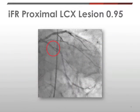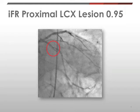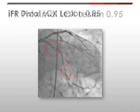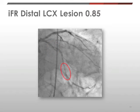In this case, we measured IFR in the proximal part of the vessel, then between lesions A and B, and then distal to lesion B. The IFR measurement in the proximal left circumflex artery is 0.95. After advancing the wire beyond the second lesion, the IFR measurement is 0.85 — a very significant IFR result.